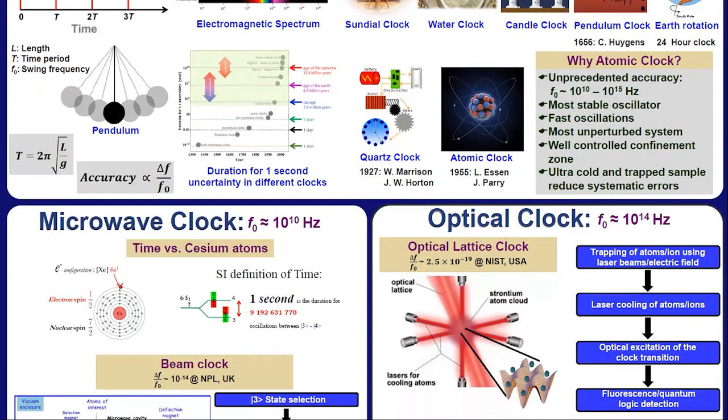In international unit of time, one second is defined with respect to caesium atom, which is the duration for 9,192,631,770 oscillations of caesium atom between its two energy state.